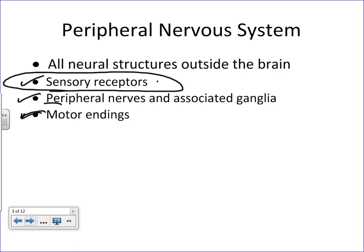Remember in the previous video titled 'Introduction to the Nervous System,' I broke down the different divisions of the peripheral nervous system — from the voluntary aspects to the involuntary aspects, and the visceral versus the motor aspects. I would go back and review that video and make sure you understand it before coming back to this one.